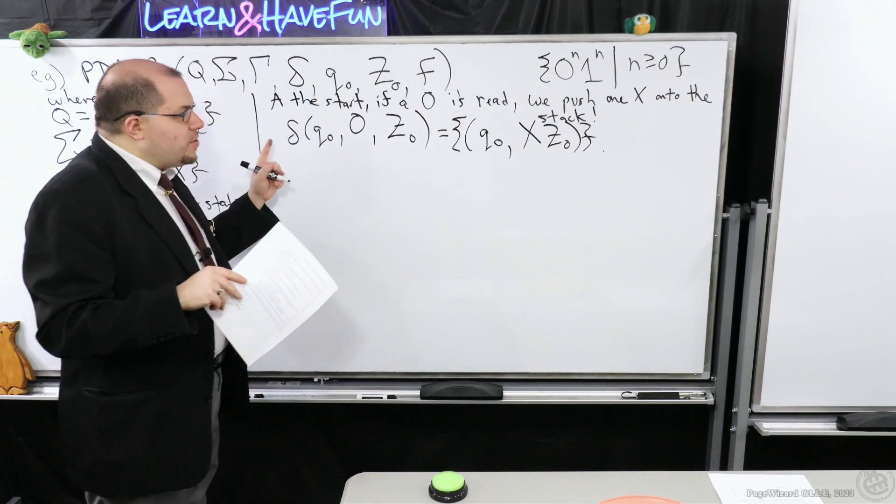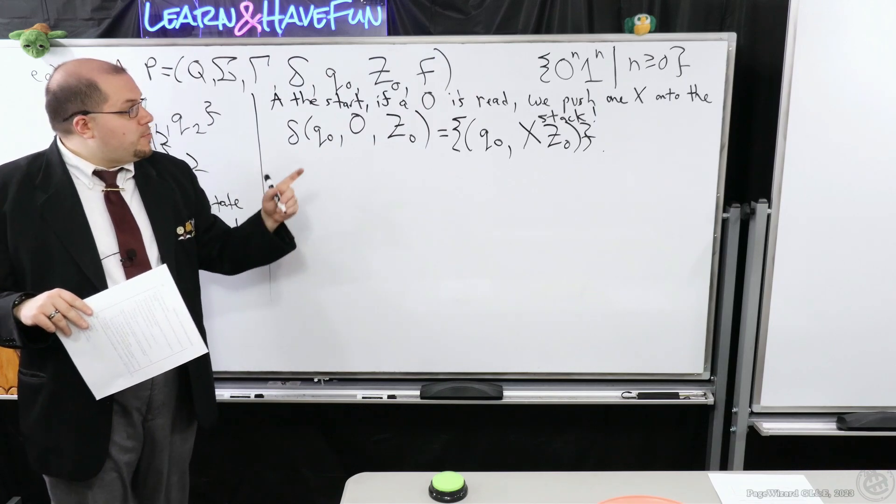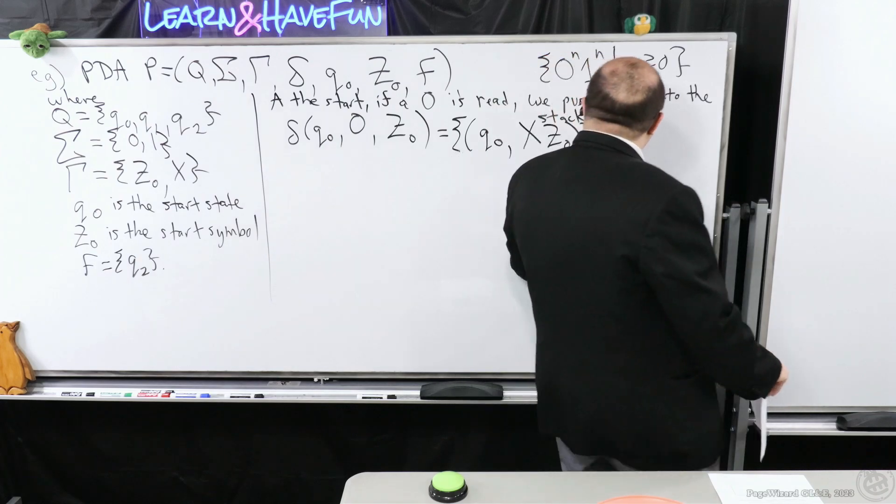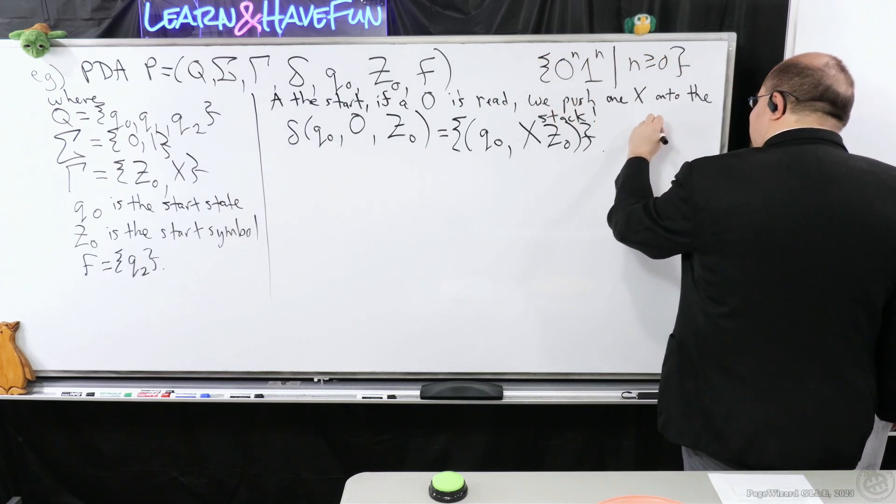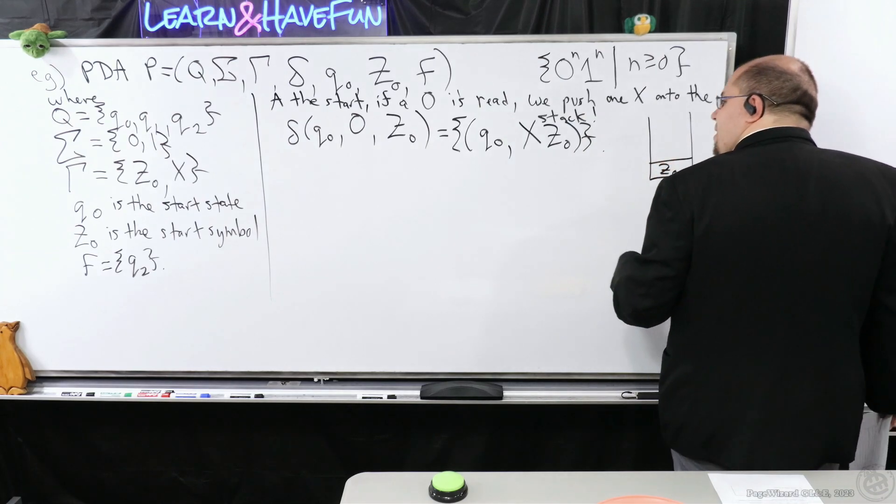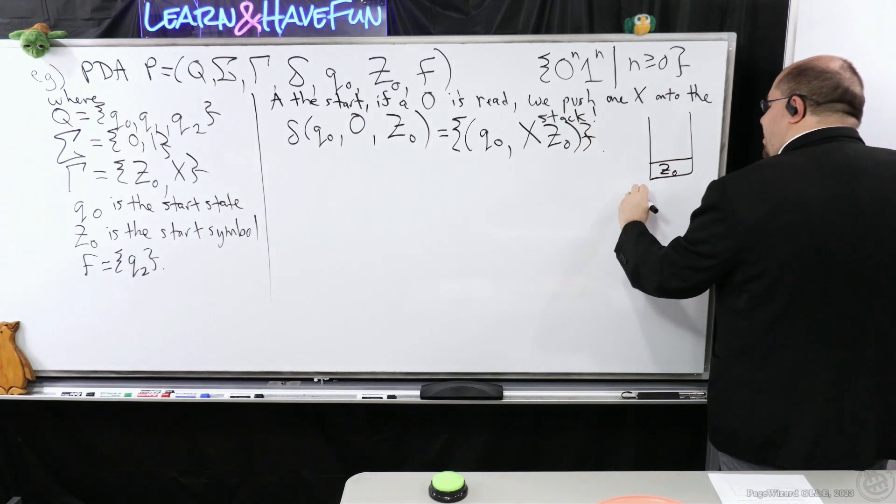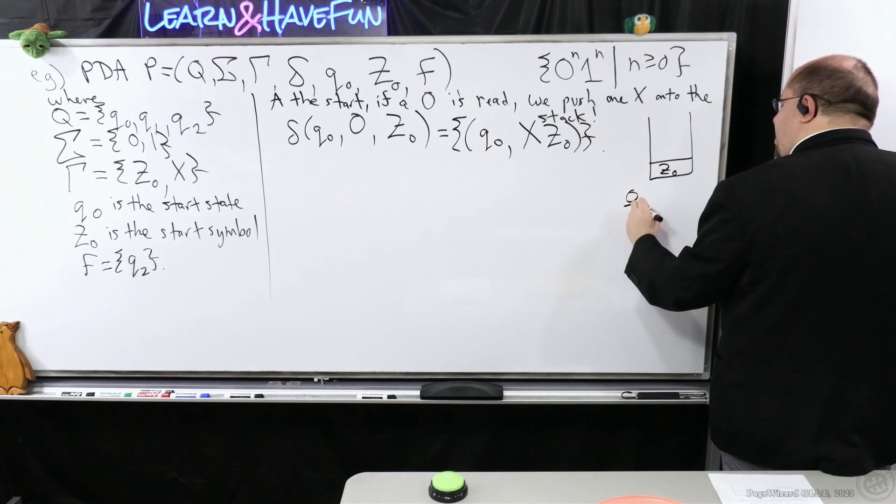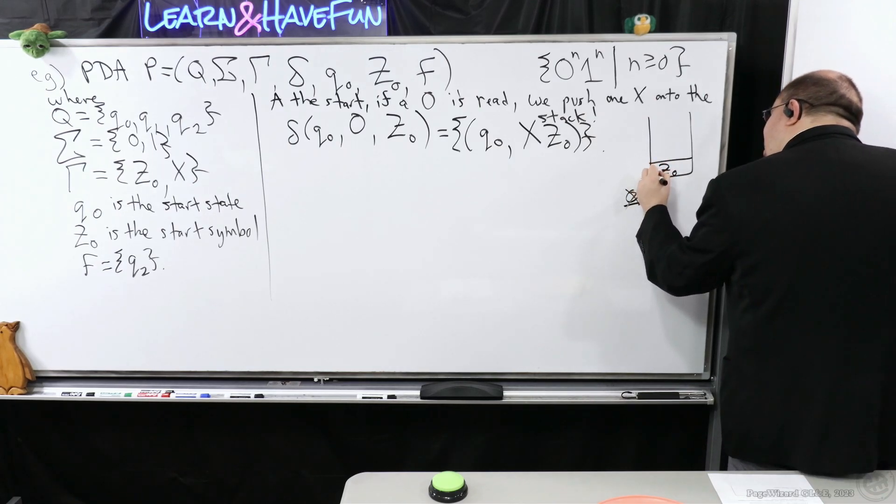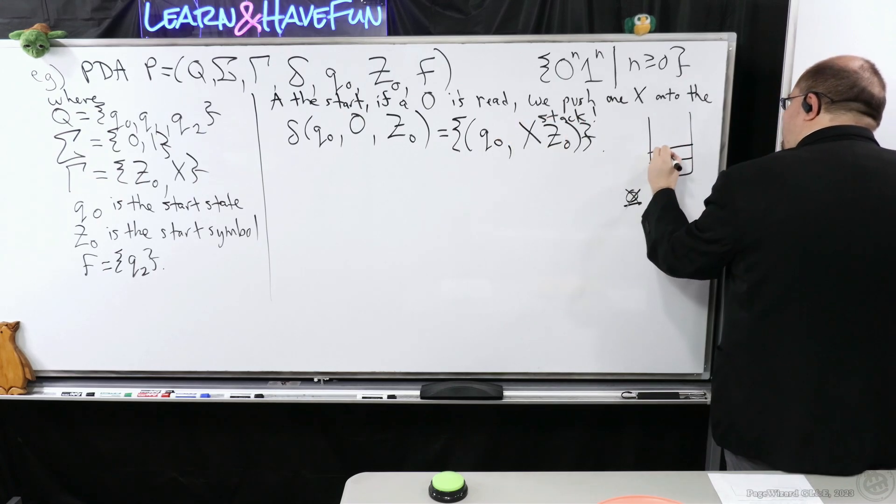So just note that this is telling me how I'm modifying the top of the stack. So there's another possibility that can happen when I'm reading the zeros. What else can happen? So remember, it starts off with z0 right here. So this accounts for the case that if I consume a zero, when the top of the stack is z0, it pushes an x.